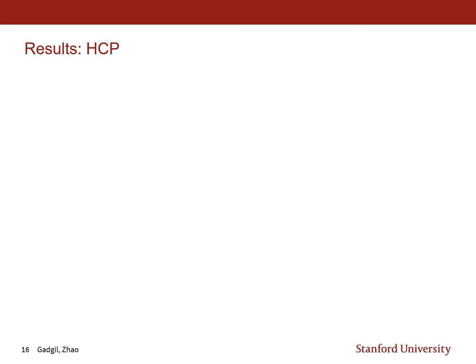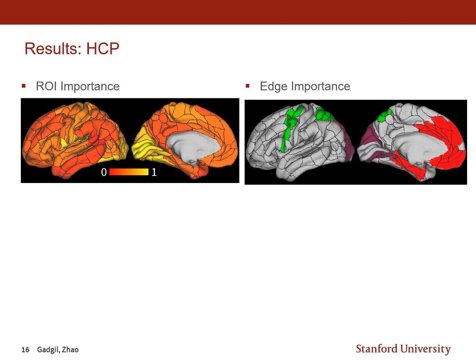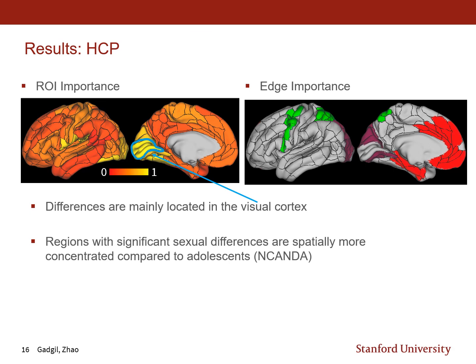Looking at the edge importance matrix results for the HCP dataset: for ROI importance, differences for sex were mainly located in the visual cortex. Additionally, regions with significant sex differences were spatially more concentrated compared to the adolescent NCANDA dataset.